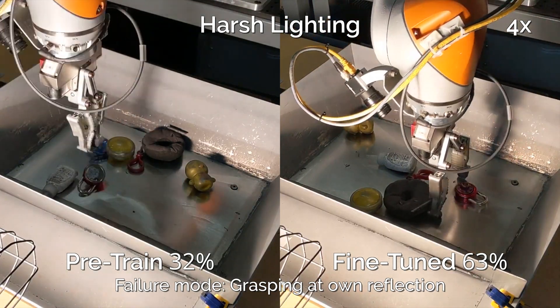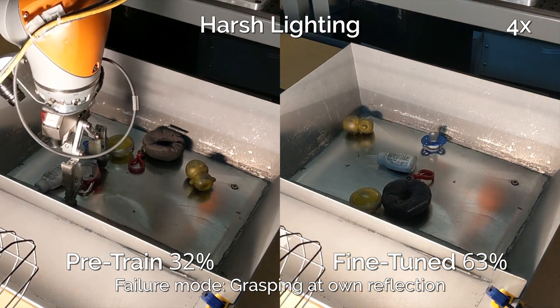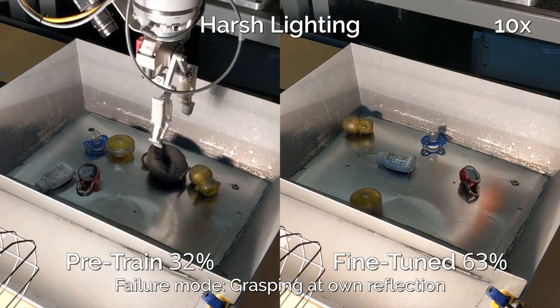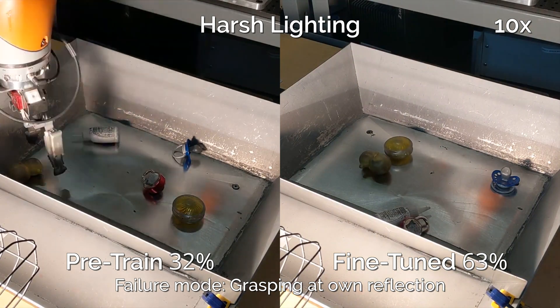Here's a variation in which we use a very bright shop light to create harsh lighting conditions in the workspace. The non-fine-tuned policy on the left repeatedly fails by attempting to grasp at its own reflection and not the objects, a behavior which our fine-tuning procedure is able to correct.